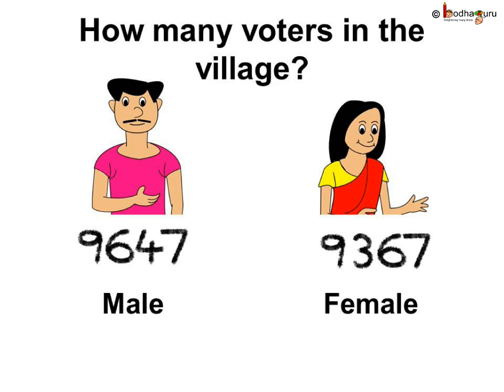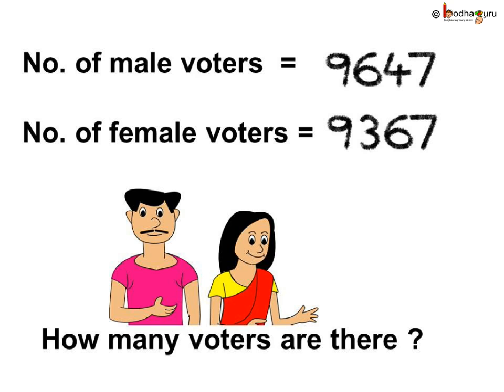Let us solve another problem. In a village, 9,647 males and 9,367 females are eligible to vote. What is the total number of voters in the village? Let us write down all the information we have. Number of male voters is equal to 9,647. Number of female voters is 9,367. Now we need to find out how many voters there are in total — the number of voters includes both the male and female voters.